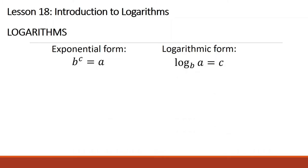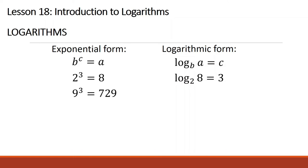Now, how do we convert exponential to logarithmic form? The exponential form is b raised to c equals a, and the logarithmic form is logarithm of a base b equals c. For example, 2 raised to 3 is equal to 8 becomes logarithm of 8 base 2 is equal to 3. We read it as: logarithm of 8 base 2 is equal to 3. Another example: 9 raised to 3 is equal to 729 becomes logarithm of 729 base 9 is equal to 3.